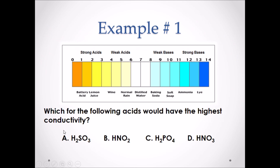Example number one: which of the following acids would have the highest conductivity? To find the highest conductivity we need a species that will ionize 100% in water, so we should be looking for the strongest acid. A, B, and C are all weak acids, so they will only ionize less than 50%. Therefore D, the strong acid, will ionize 100% in water — it will produce the most ions, which gives the highest conductivity.